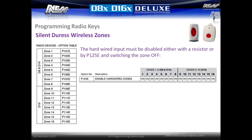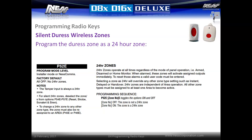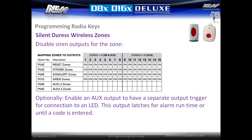Next, disable the zone's hardwired input by placing a resistor into the zone or deprogramming it via option p125e, then deselect the zone followed by E. Program the zone as a 24-hour zone by entering location p52e and activating the zone followed by E. Disable the siren outputs for the zone in locations p54e through to p57e — you can selectively choose which siren outputs to enable or disable for the radio zone. Optionally, an auxiliary output could be enabled for the zone and connected to an LED indicator, which will latch for the siren runtime or until reset by a code, serving as a visual indicator that a duress has been triggered.